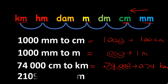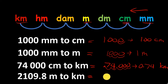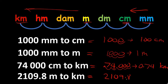Next: 2,109.8 meters to kilometers. From meter going to kilometer is three steps away. Starting with 2,109.8, we move the decimal point three places to the left. Therefore, the final answer is 2.1098 kilometers.